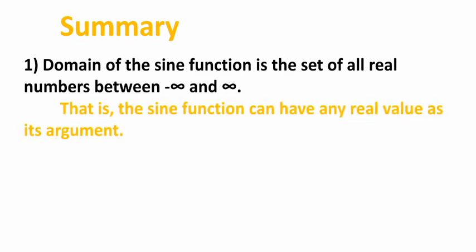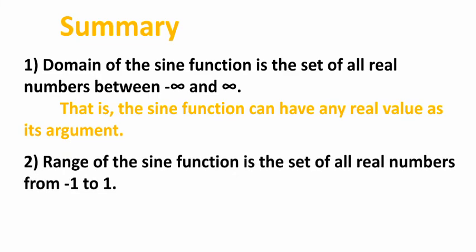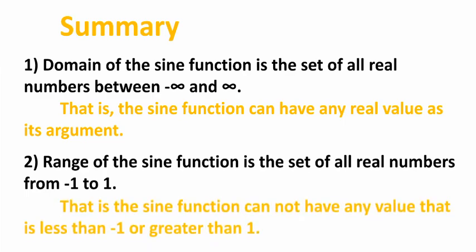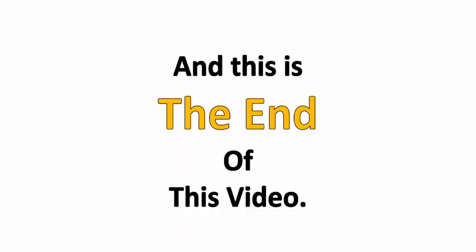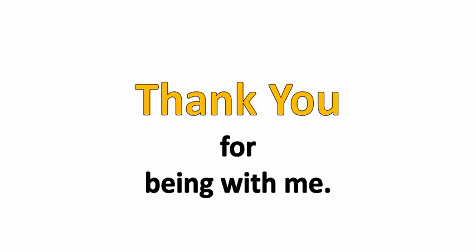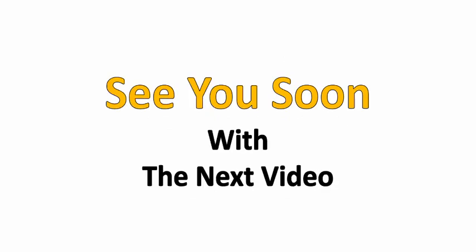In summary: the sine function can have any real value as its argument. The range of the sine function is the set of all real numbers from negative 1 to 1 — that is, the sine function cannot have any value less than negative 1 or greater than 1. This is the end of this video. Thank you for being with me. See you soon with the next video. Stay happy, goodbye.